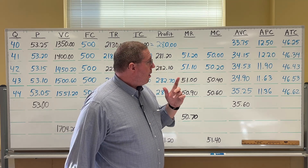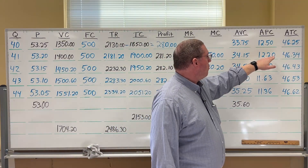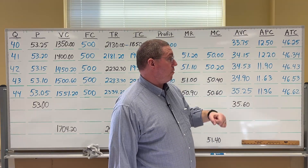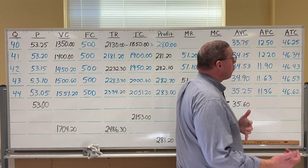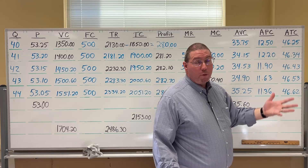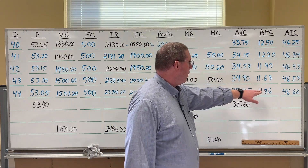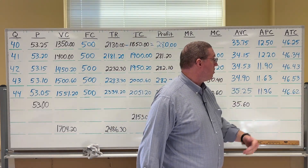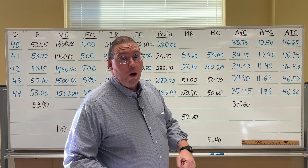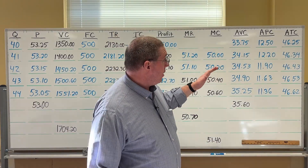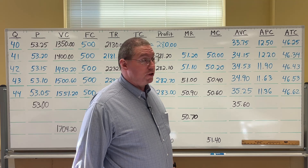You may want to pause and check your numbers against mine. Remember what I said about being careful with the addition method: for row 41, adding AVC and AFC gives 46.35, but dividing total cost $1,900 by 41 rounds to 46.34. If your numbers don't match, rewind and watch the calculation steps again.